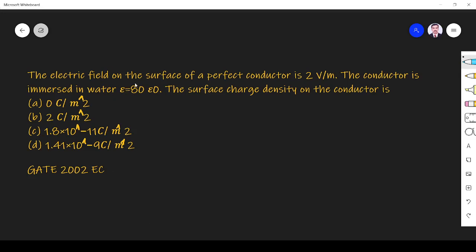The question is: the electric field on the surface of a perfect conductor is 2 volts per meter. Let us have a perfect conductor here on the surface of the conductor is 2 volts per meter. The conductor is immersed in water with epsilon equal to 80 epsilon naught.